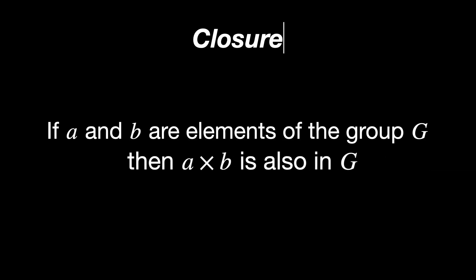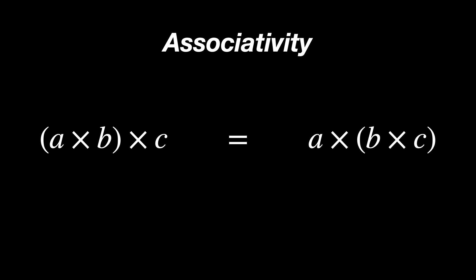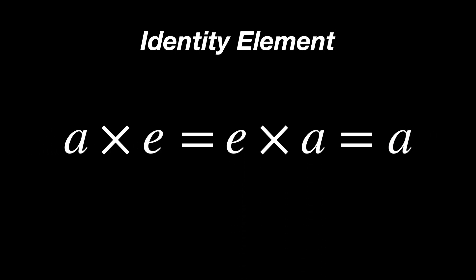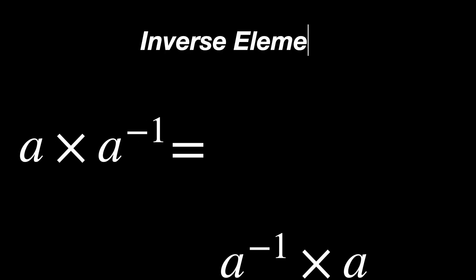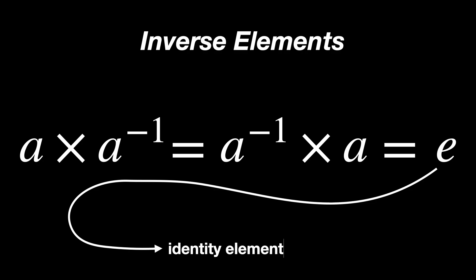A group is a collection of elements with a single operation that combines two elements to form a third, while satisfying four rules. Closure: combining any two elements produces another element within the group. Associativity: the way elements are grouped when performing operations doesn't affect the outcome. Identity element: there is a neutral element that when combined with any other element results in that other element. Inverse elements: for every element there is another element that, when combined with it, results in the identity element.